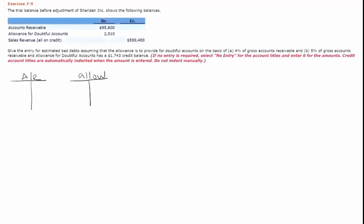The data set tells us that accounts receivable has a debit balance of $95,600 and the allowance account, although traditionally has a credit balance before any adjustments, right now has a debit balance of $2,010.